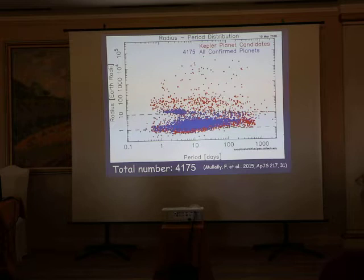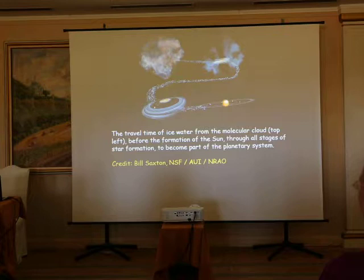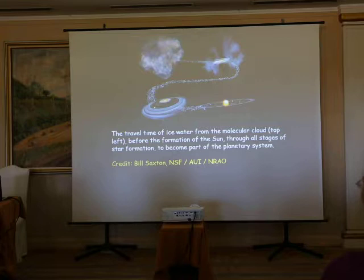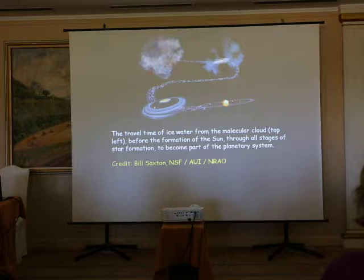We have roughly 4,000 planets detected. The very good news is that the water we have on Earth is coming from the nebula that was present in our neighborhood before the formation of the solar system. This means that water is present everywhere in the universe, because we have many molecular nebulas, and therefore the presence of water is common in the universe.